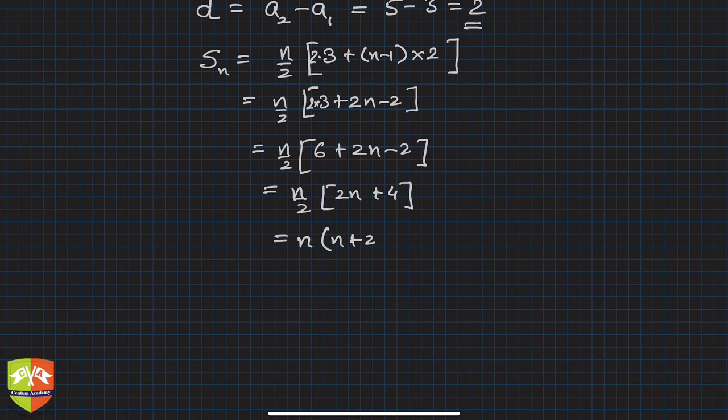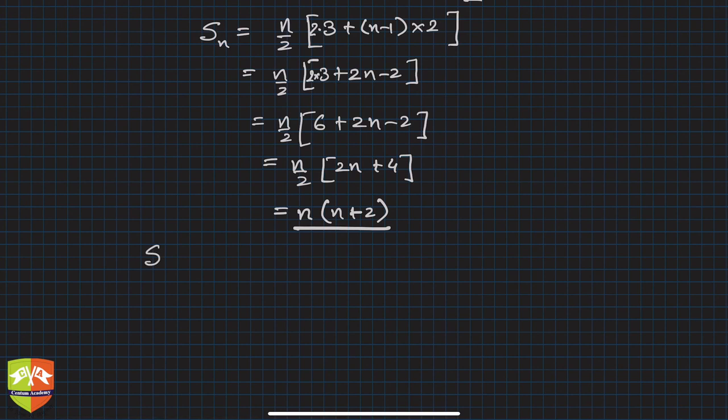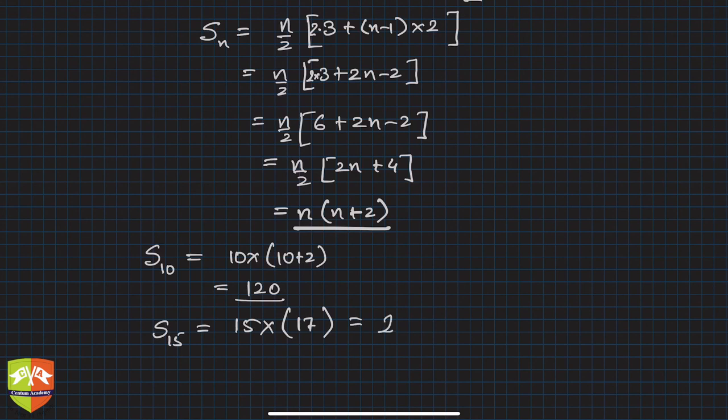So if you see, what will be S_10? Sum of first 10 terms will be simply 10 into (10 plus 2), that is 120. Likewise you can find out S_15. Sum of first 15 terms of the given AP will be 15 into 17 (15 plus 2), and it will be 255.